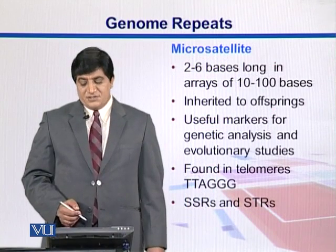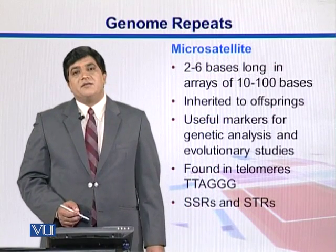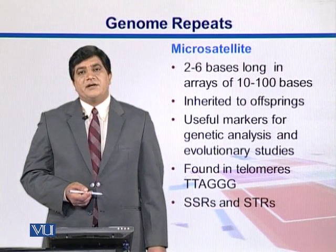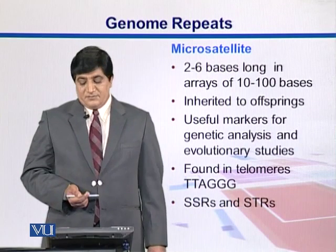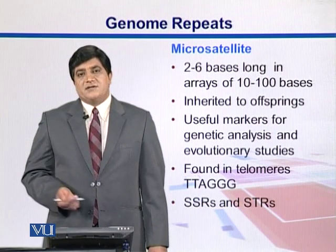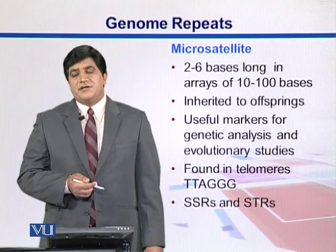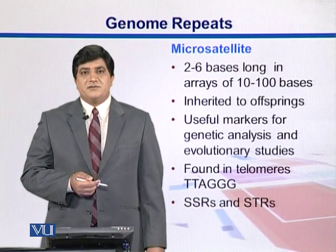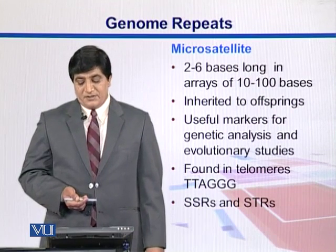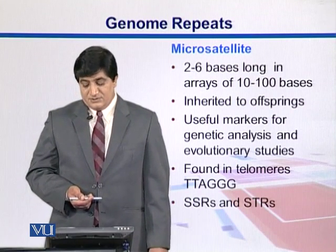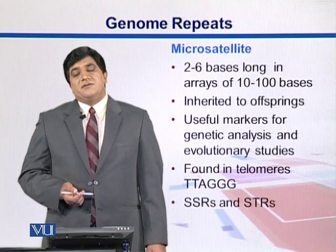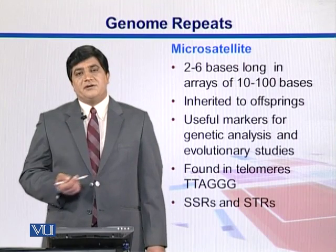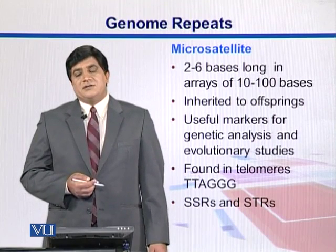Microsatellites are two to six bases long and can be present in arrays of ten to hundreds of bases. They are also inherited by offspring and used as genetic markers, similar to the previous example. They are found in telomeres; one example is the six-nucleotide segment TTAGGG. Typical examples are SSRs (simple sequence repeats) and STRs (short tandem repeats).